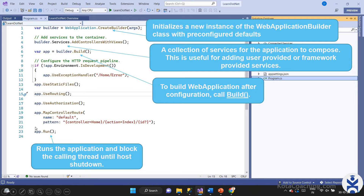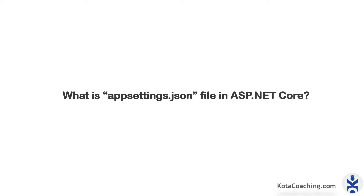Finally we call Run, which runs the application and blocks the calling thread until the host shuts down. After calling Run, any middleware added would not be executed. So Run is the final call to launch the application. I hope you understood program.cs — it is just an entry point for adding services and middleware, which you can also call a request pipeline. I will explain more details about the pipeline and middleware later.